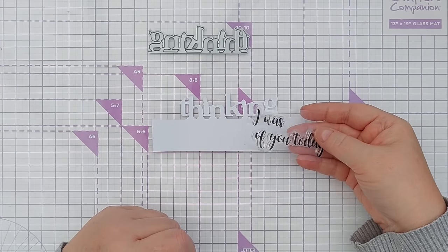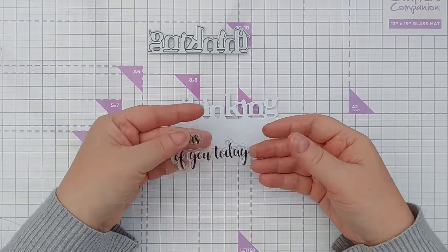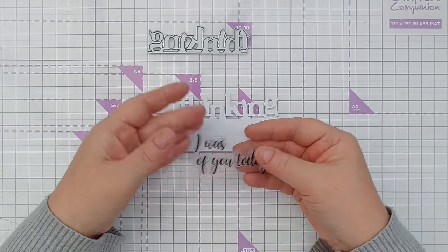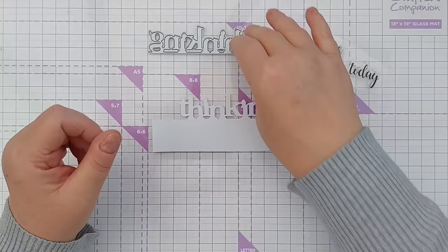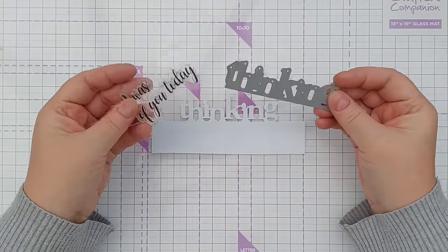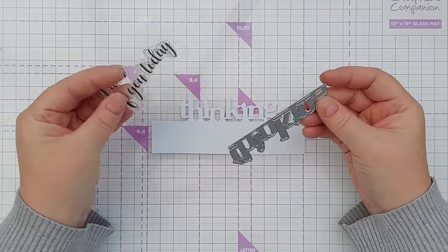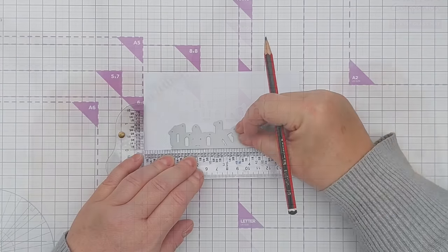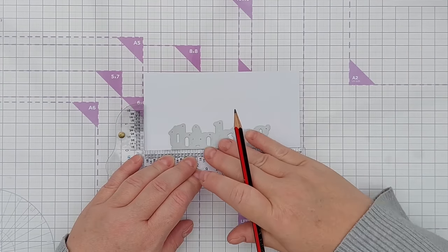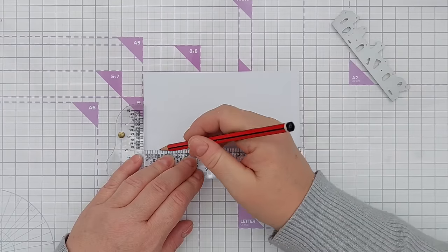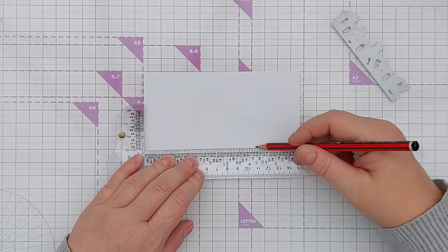Or you could not have the 'I was', you could just have 'thinking of you today' or 'thinking of you'. So it's a pretty versatile little set. So I'm going to try this set out in a couple of ways and show you a few cards that you can make using this. I've got a panel of smooth white card here and I want to put my die about there.